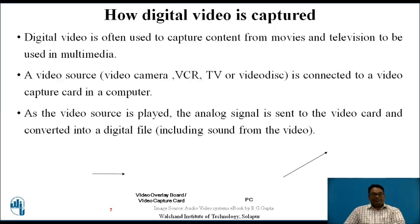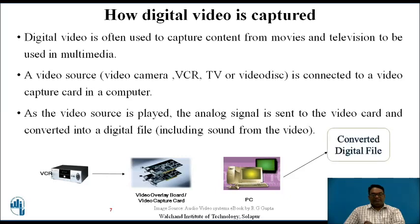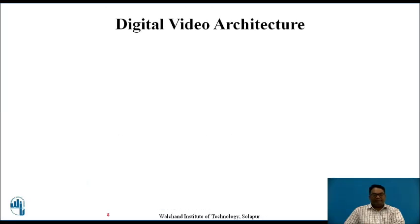How is digital video captured? Digital video is often used to capture content from movies and television to be used in multimedia. A video source — which consists of a video camera, VCR, TV, or a video disc — is connected to the video card in a computer and the video source is played. The analog signal is then sent over the video card and converted into a digital one. Here the VCR plays the analog video file, it is given to the video card for capturing, and the PC then converts the signal into the digital one, producing a converted digital file.